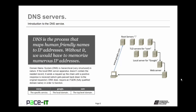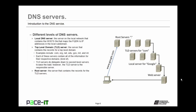An FQDN is something like www.google.com. The 'www' is the specific service being requested. The 'Google' portion is the local domain that contains that specific service. And 'com' is the top level that contains Google. Now let's talk about the different levels of DNS servers. There can be a local DNS server — the server on the local network that contains the hosts file mapping all FQDNs to their specific IP addresses in the local subdomain. It may be present, or it may not.